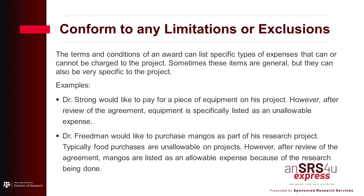For example, Dr. Strong would like to pay for a piece of equipment on his project. This wasn't something that was in the budget — perhaps something broke and it was needed further along in the project. We would review the agreement to see what it says. In this case, it specifically states that equipment is unallowable. If the agreement states that, it's a hard stop — we're not going to be able to move forward with that expense. It's not something we would go further and ask the sponsor about either, since the agreement already lists that answer as no.